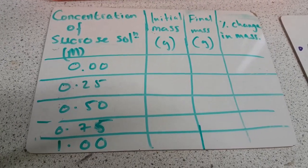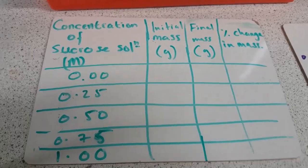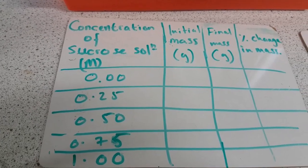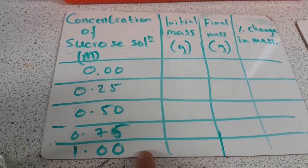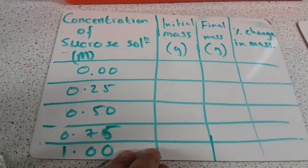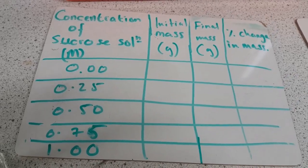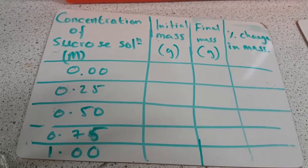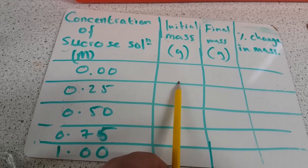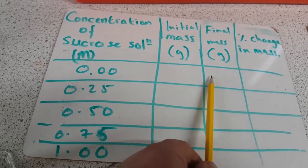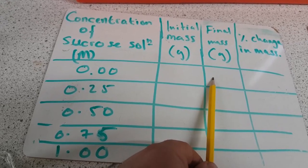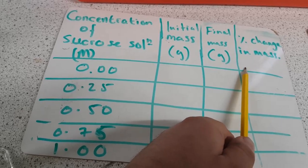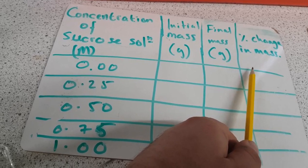So in terms of our results table, our results table would look like this. Now the first column of a results table is always the independent variable, so in other words, the one that we're changing. What we are changing within this experiment is the concentration of sucrose solution. Here we've got our initial mass, so that's the mass that we measure first, and then our final mass, which is 24 hours later. And what we have to do is we have to work out the percentage change in mass over that 24 hour time period.